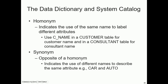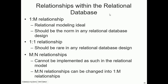The data dictionary also handles homonyms and synonyms. A homonym indicates the use of the same name to label different attributes — for example, 'c_name' used for customer name in a customer table and consultant name in a consultant table. A synonym is the opposite: using different names to describe the same attribute — for example, 'car' and 'auto'.